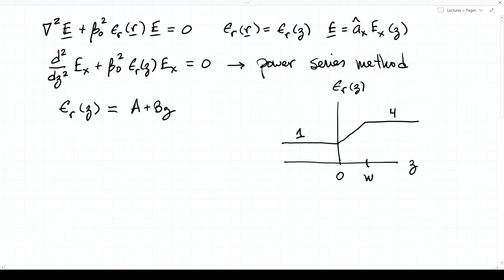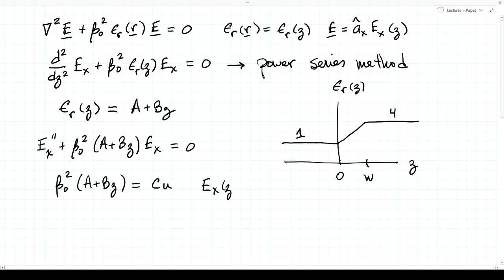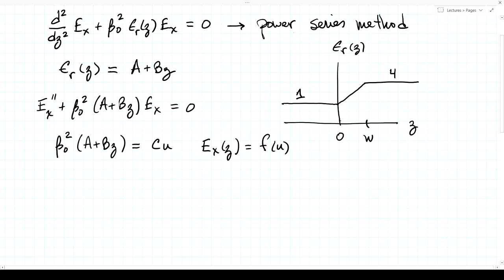Our equation becomes Ex double prime plus beta zero squared times (A plus Bz) times Ex equals zero. It's convenient to define a new coordinate U such that beta zero squared times (A plus Bz) equals C times U, so that Ex of z becomes F of U. This substitution will make the power series algebra easier.